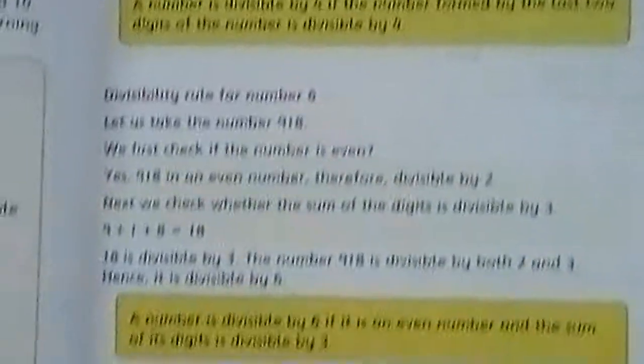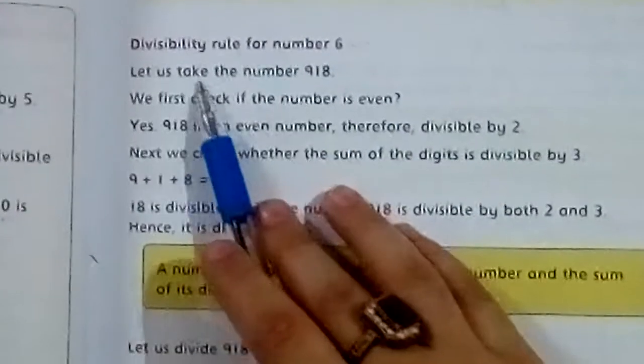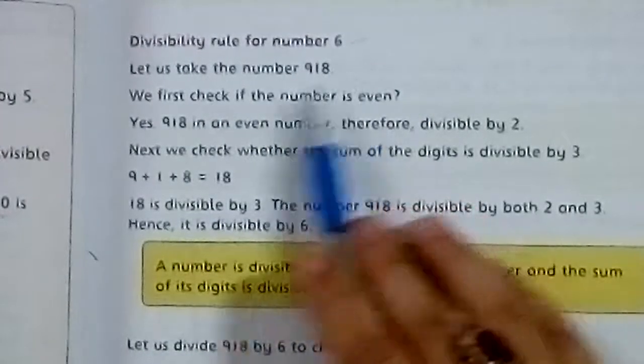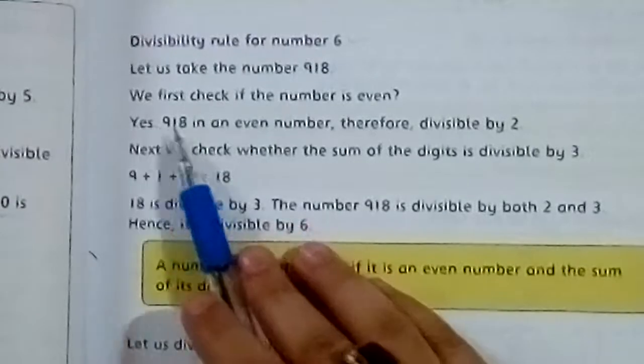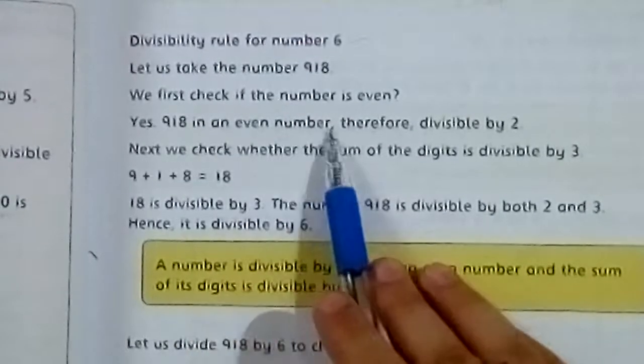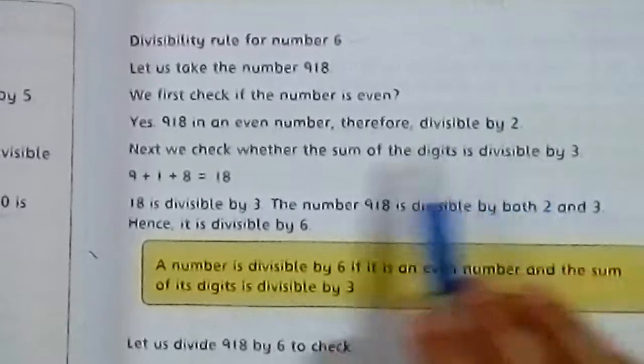Now, come to the next rule. Divisibility rule for number 6. Let us take the number 918. We first check if the number is even. Yes, 918 is an even number. Therefore, divisible by 2. Next,